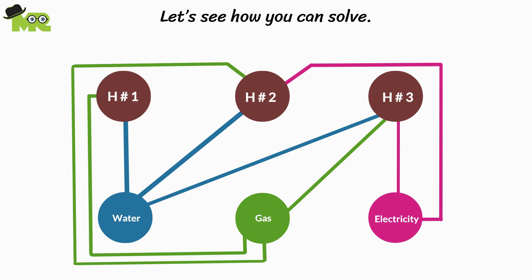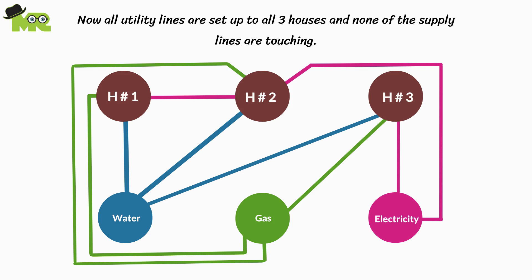Don't worry, friends. Just take an electrical line from house number two to house number one. Now all utility lines are set up to all three houses and none of the supply lines are touching or overlapping one another.